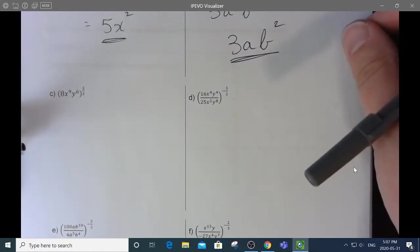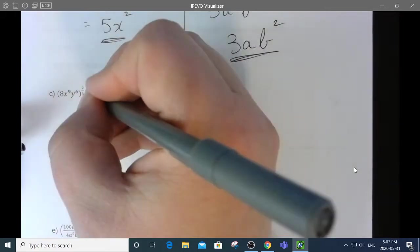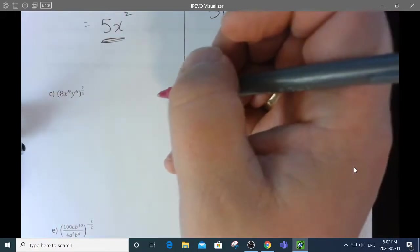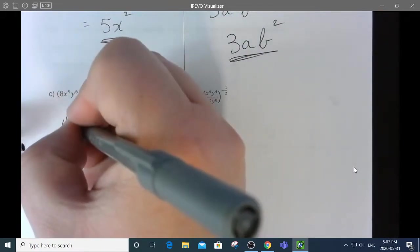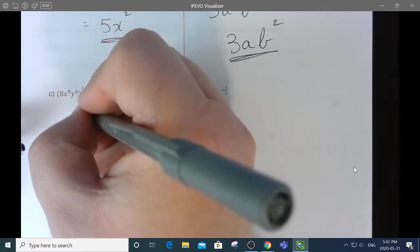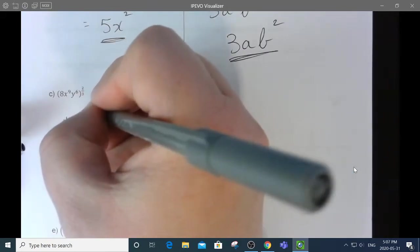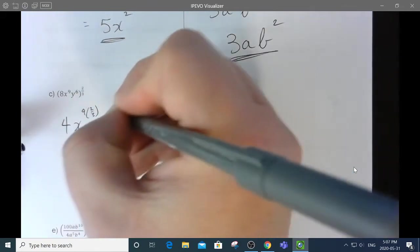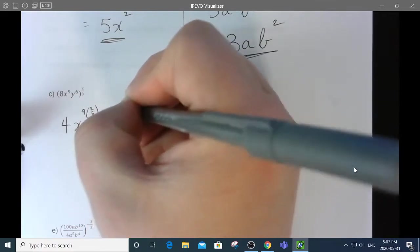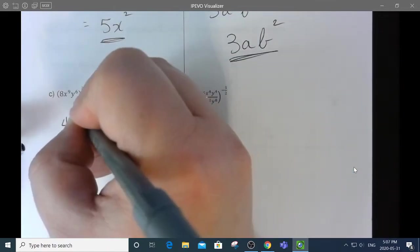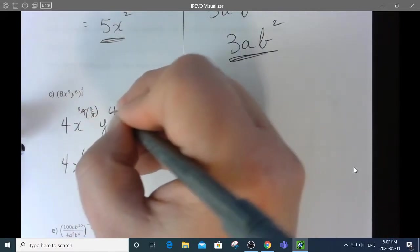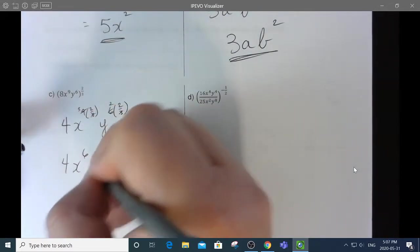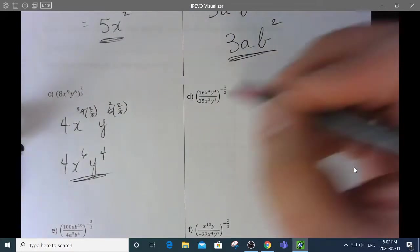Looking at that one. What's easier? Squaring 8 then cube rooting it or cube rooting 8 then squaring it? It doesn't matter. Either way, you get a 4. But now I get x to the 9 times 2 thirds, y to the 6 times 2 thirds, and 3 goes into 9 three times. So, that's actually 4x to the 6. 3 goes into 6 twice, and that's y to the 4.